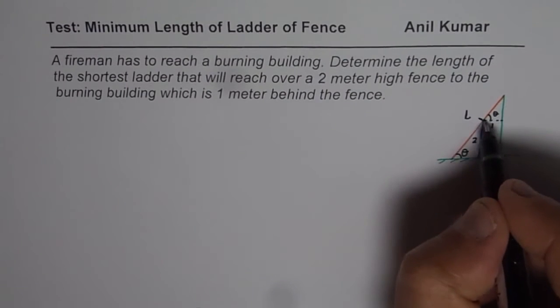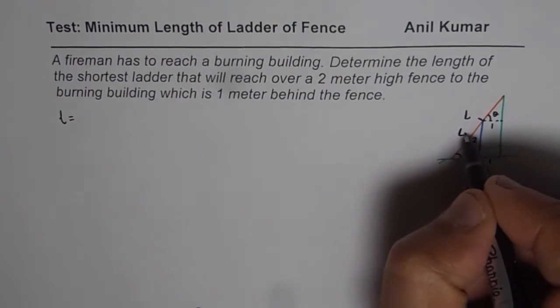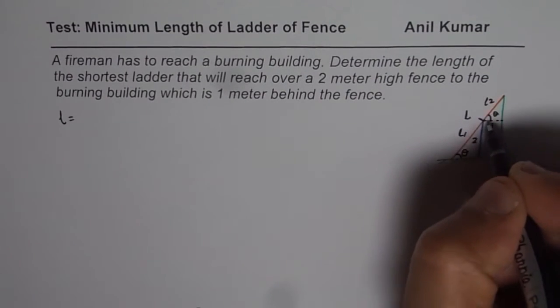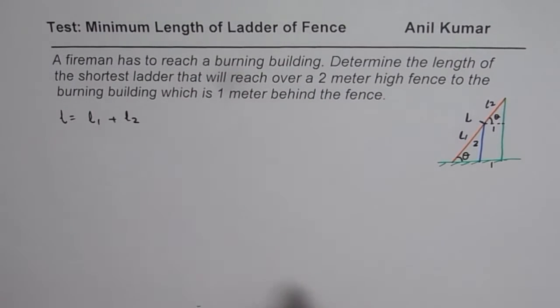So what we can do is we can say length is combination of this length which is L1 and L2. These two lengths combined together will give us the total length of the ladder.